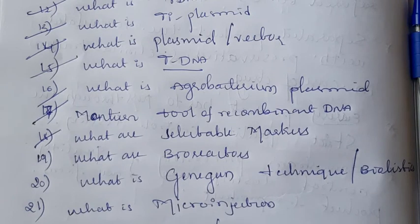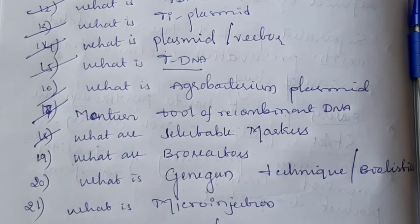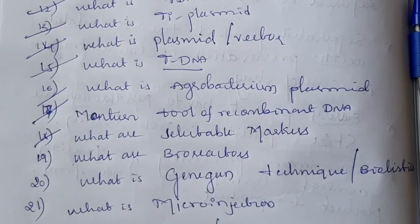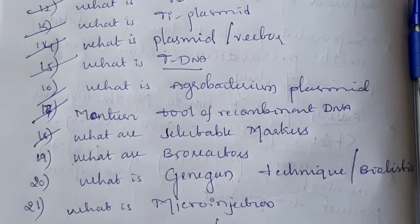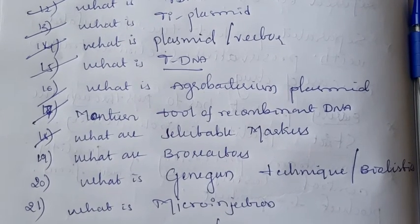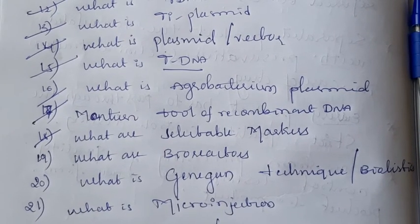Next question: what are bioreactors? Bioreactors are large-scale vessels which help for recombinant DNA technology. They provide the optimum condition for culturing or growth of bacteria, and help the growth of recombinant DNA on a large scale.